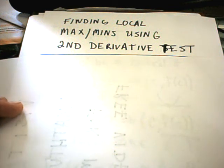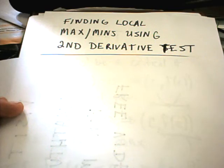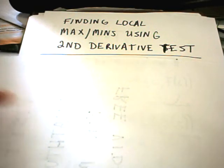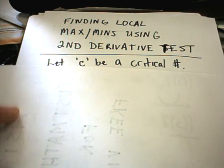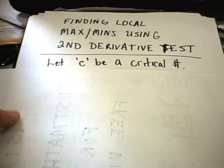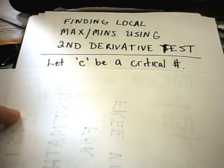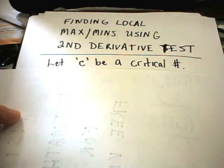In this video, we're going to talk about using the second derivative test to find a local maximum and minimum. What the second derivative test is: first, you find your critical numbers. C is going to denote a critical number. A critical number is a point in the domain of the original function where the derivative either equals zero or where the derivative is undefined.